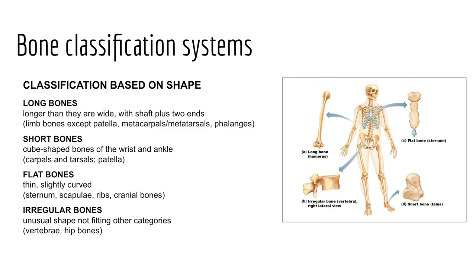Flat bones typically serve in a protective role, such as those forming the cranium that protect the brain. Irregular bones have more complicated shapes — including vertebrae, the coccyx or tailbone, and some bones of the head and neck. A fifth category worth noting is sesamoid bones, which develop inside tendons — such as the patella of the knee — generally involved with joints to decrease friction and pressure, though our textbook uses just the four-part classification.